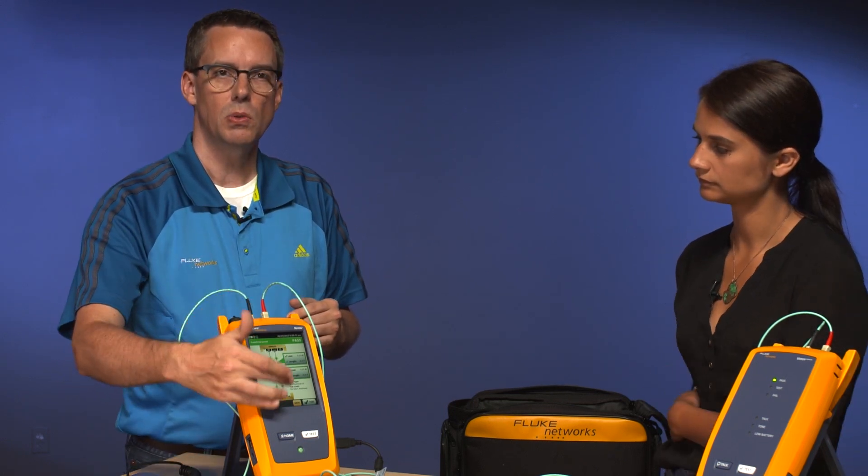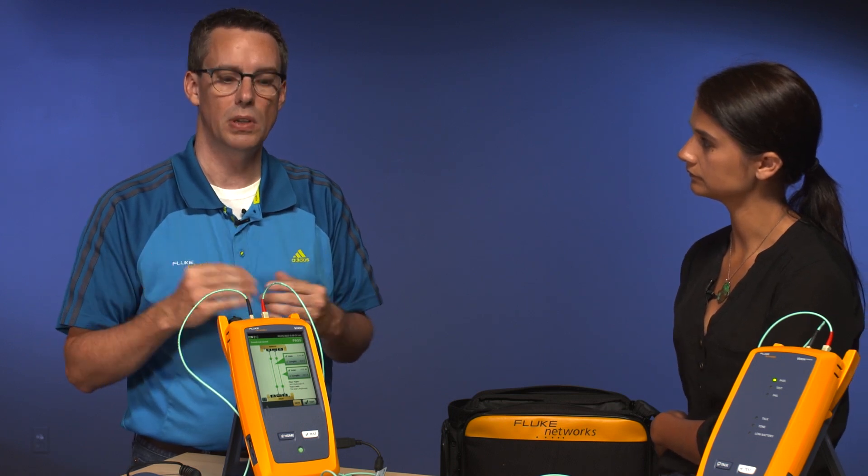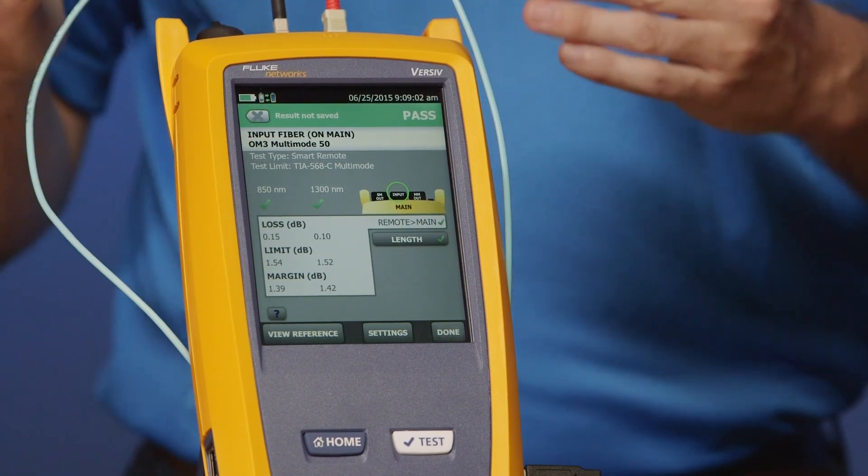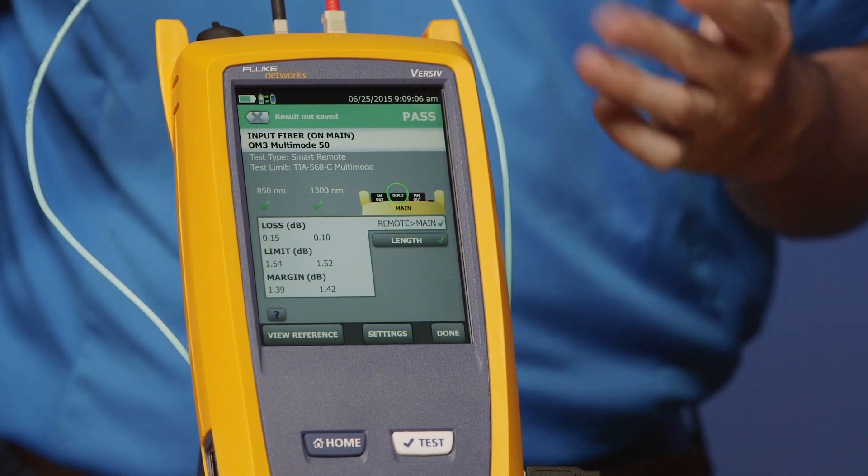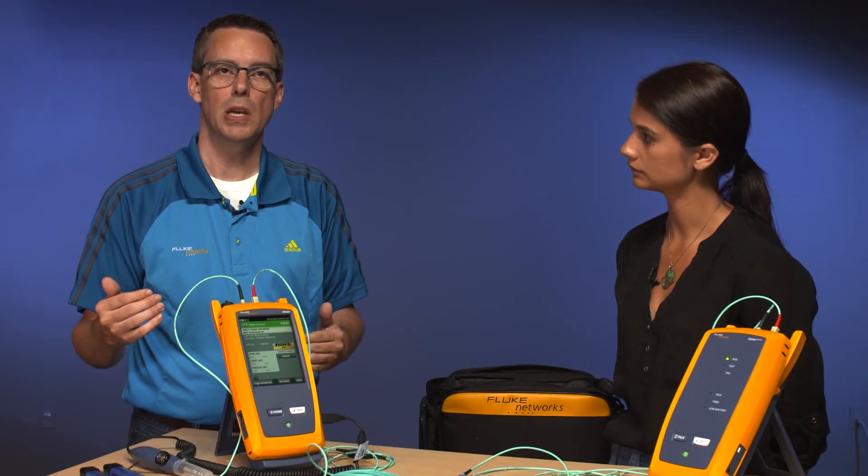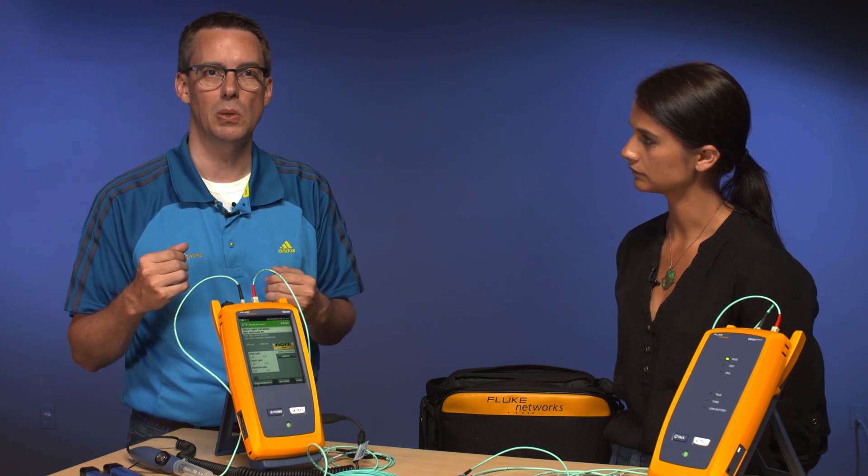You'll also notice we've got our green boxes here. That's indicating our loss, and it's pointing to which fiber it's referring to. Go ahead and hit one of those green boxes for me. So you can, if you want to, drill into detail, and in here you'll see what the loss actually was at both wavelengths, and the limit that was calculated based on the length of the fiber measured and how many connectors that you put in the tester, along with that test limit that you selected.